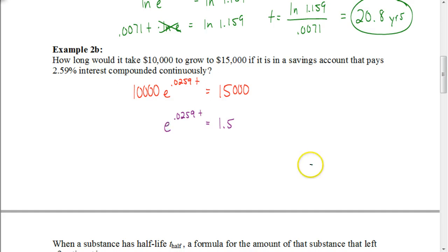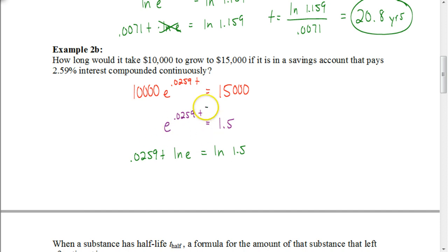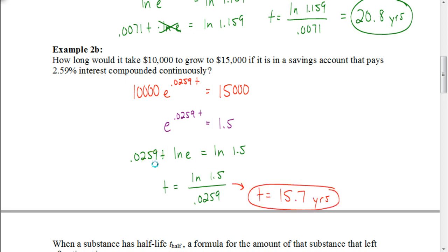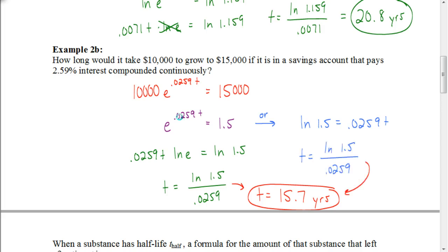There are two methods we could use. Using the first method — taking the natural log of both sides — the exponent moves in front of the natural logarithm. Since the natural log of E is 1, divide both sides by 0.0259 to get T by itself. That gives an answer of 15.7 years. Alternatively, put it in logarithm form: the natural log of 1.5 equals the exponent 0.0259 times T. Divide both sides by 0.0259, and you get the same answer of 15.7.